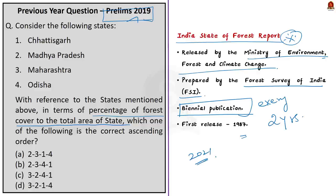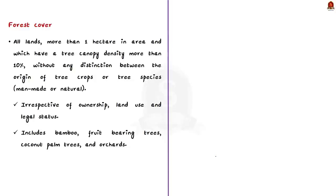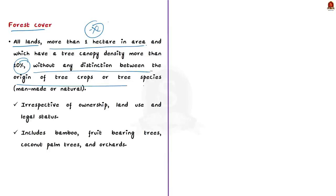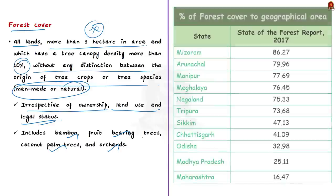This report provides definitions for major environment and forest-related terms, including forest cover. According to the report, forest cover includes all lands that are more than one hectare in area and which have a canopy density more than 10%. Remember this definition — there might be a direct question based on it. This forest cover does not make any distinction between the origin of tree crops or tree species — there is no classification whether forest cover is man-made or natural. Therefore, the definition includes all types of land irrespective of ownership, land use and legal status, and includes all tree species along with bamboo, fruit-bearing trees, coconut palm trees, and orchids.